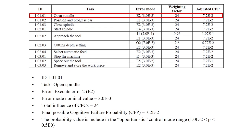For ID 1.01.01 (open the spindle), the error mode value is 24, and the adjusted CPC is 7.2×10⁻². These values come from the example. Calculating each part may take longer time — it is not fast. You have to understand and perform each step carefully, so it may take several hours.